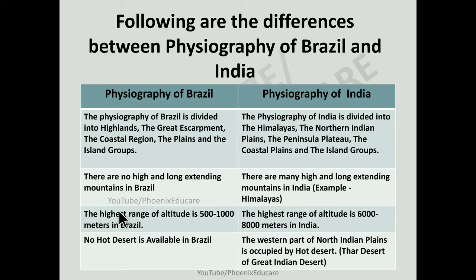The highest range of altitude in Brazil is 500 to 1000 meters. The highest peak in Brazil is Pico de Neblina at around 3000 meters, but the rest of the country ranges between 500 to 1000 meters. In the case of India, the highest range of altitude is 6000 to 8000 meters, as we have the Himalayas with an average height of 6000 to 8000 meters.